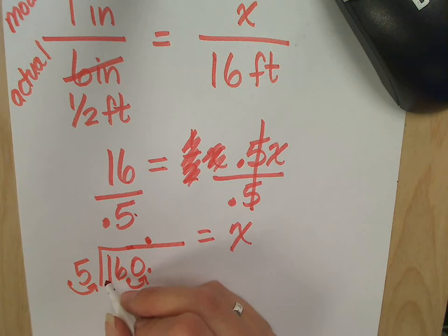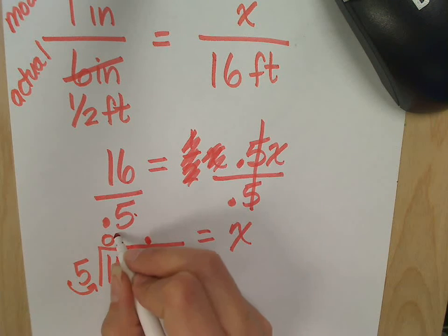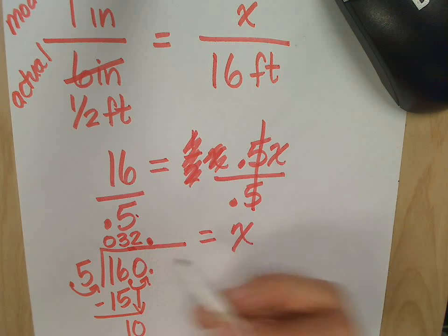15 into 1? 0. 0 times. 15 into 16? 3 times. And that's 15. Subtract. You get 1. Bring down your 0. 5 into 10? 2. And that's 10. 32 is my answer.